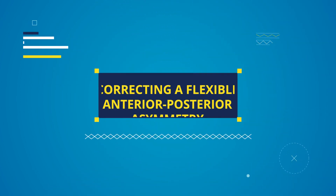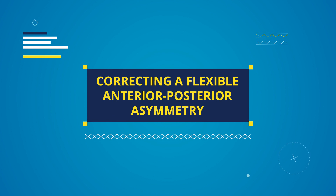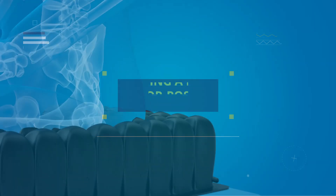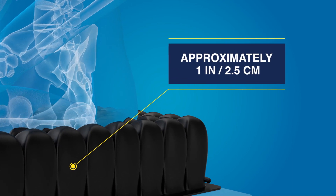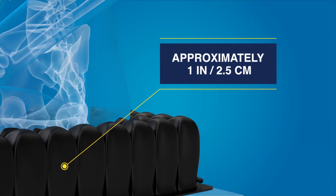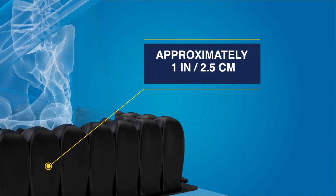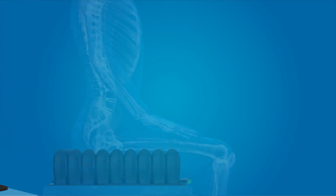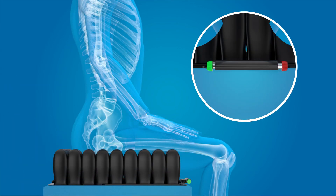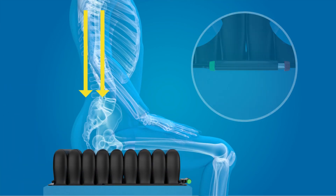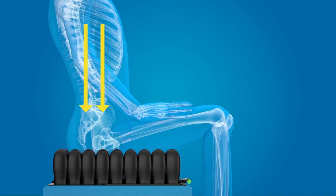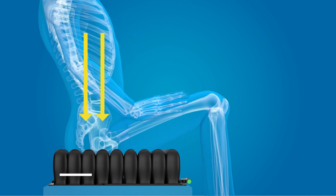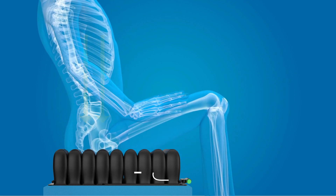To correct a flexible anterior-posterior asymmetry like a posterior pelvic tilt, make sure there is approximately one inch of air between the client's ischial tuberosities and the seat surface. Make sure the isoflow control is open by pressing the green knob in. Lift the client's knees to put downward pressure on the pelvis and force air to the front quadrants. This creates a contour for the pelvis to prevent forward migration.